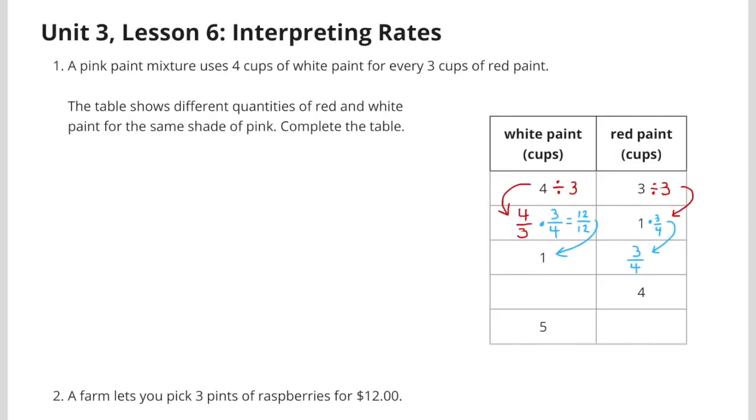In order to turn the 4 thirds into 1 cup of white paint, I would have to multiply it by its reciprocal, which would be 3 fourths. So 4 thirds times 3 fourths equals 12 twelfths. 12 twelfths equals 1. So 1 cup of white paint. Next, I'd have to multiply the 1 cup of red paint by 3 fourths. 1 times 3 fourths is 3 fourths.